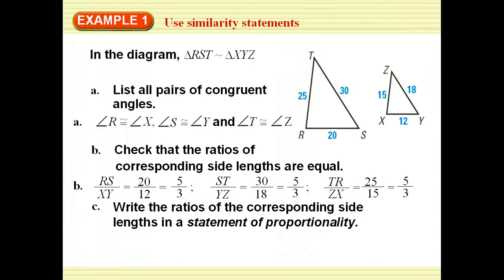We can write the ratios of the corresponding side lengths in a statement of proportionality by simply stating that the lengths of all of these will end up being equal to each other.